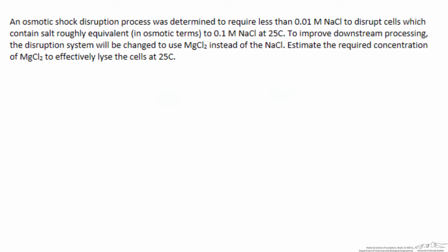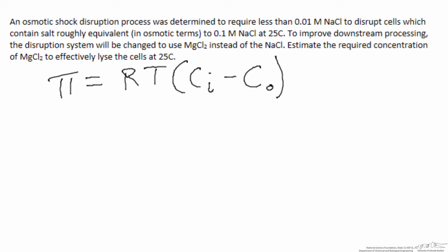The first question we'd ask is why would these two salts behave differently in an osmotic shock type process where we're trying to lyse cells. To understand that, we need to know the governing relationship that drives osmotic pressure — this transmembrane pressure established on the basis of different concentrations of salt inside and outside of the cell. We'd use the Van't Hoff law to relate those, which simply relates osmotic pressure with temperature and the concentration of particles inside versus outside the membrane.